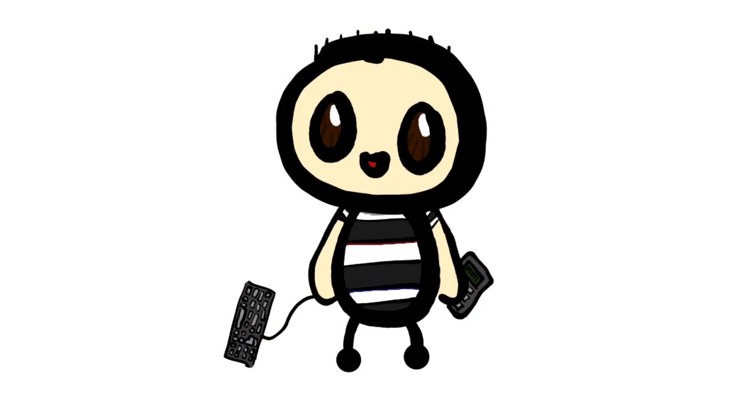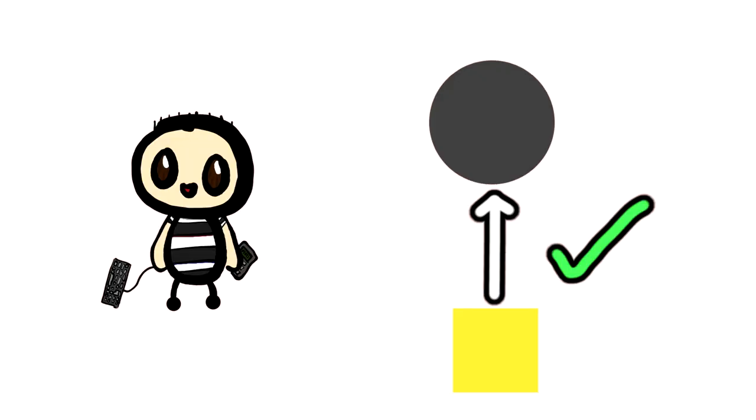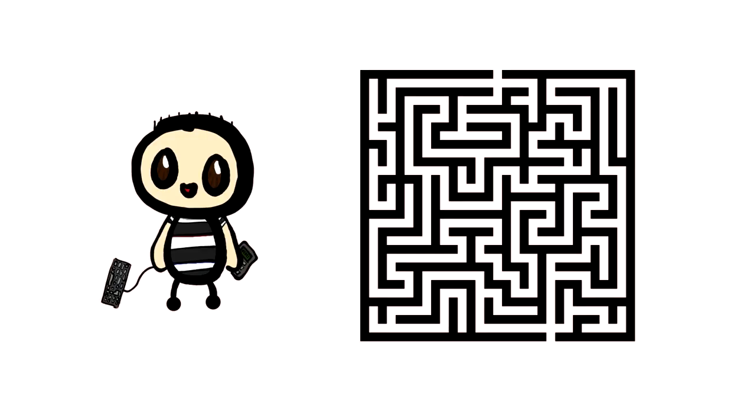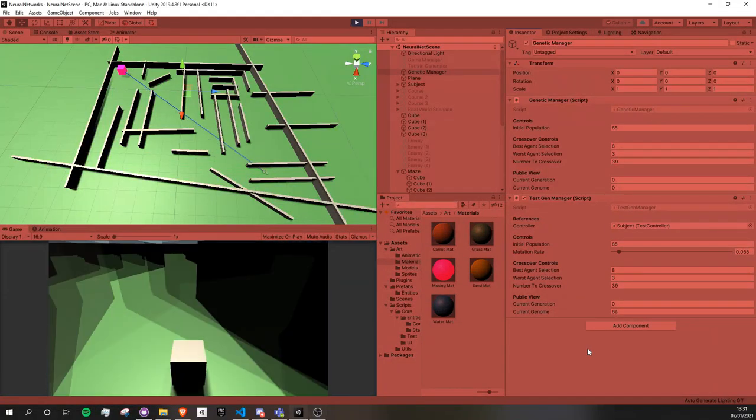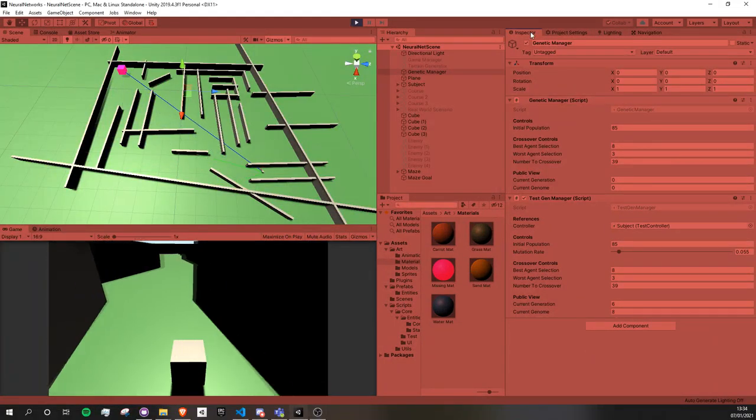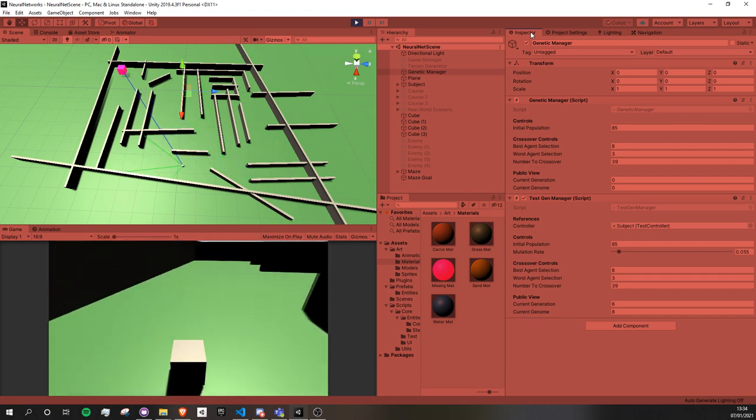I showed my progress to one of my friends and he posed an interesting question. Okay, you can make it avoid things and you can make it follow things. So does that mean that you could make it solve a maze? Turns out that yes, yes I can. By giving it a goal and prioritizing the shortest distance to that goal, this AI was able to find a way to reach it after just a few generations.